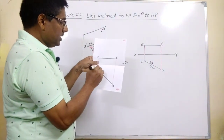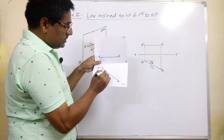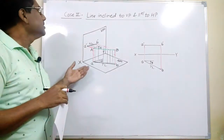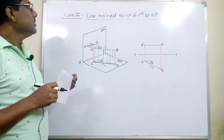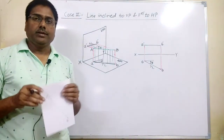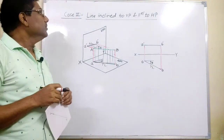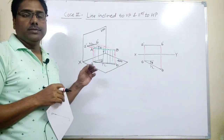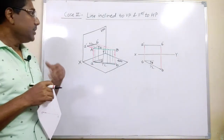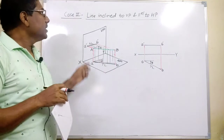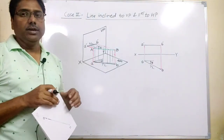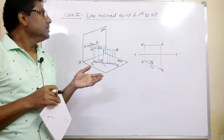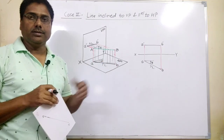This is the true length. I hope you have understood the concept of a line inclined to VP and parallel to HP. Thanks for watching. We will go on to further cases: line in VP inclined to HP, line in HP inclined to VP, line parallel to both planes, and line in both planes. After covering all these cases we will go to the oblique line, that is a line inclined to both planes. In Case 1 and Case 2 the line is inclined to one plane and parallel to the other.